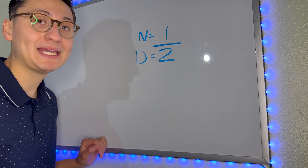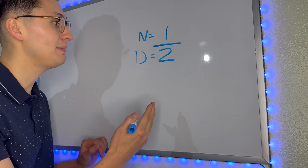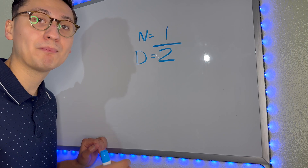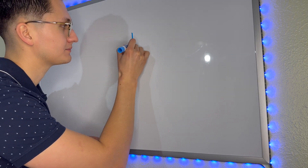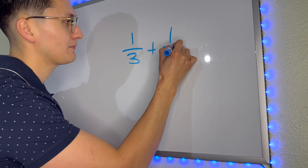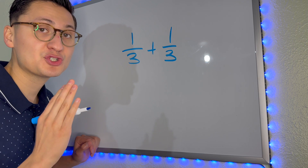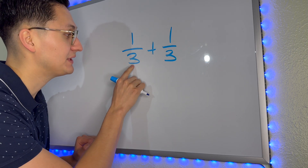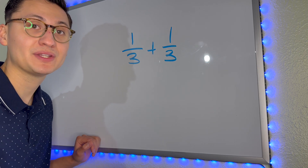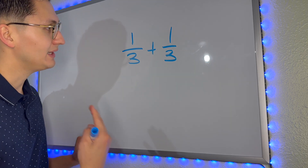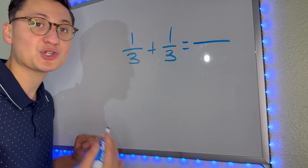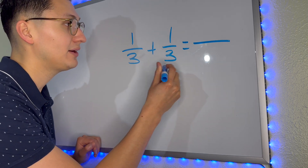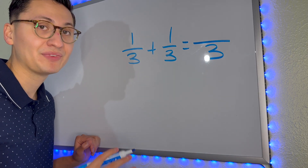So today we will be adding fractions that have common denominators, that have the same number downstairs. When we are adding and subtracting fractions, the denominator always stays the same. It does not change.